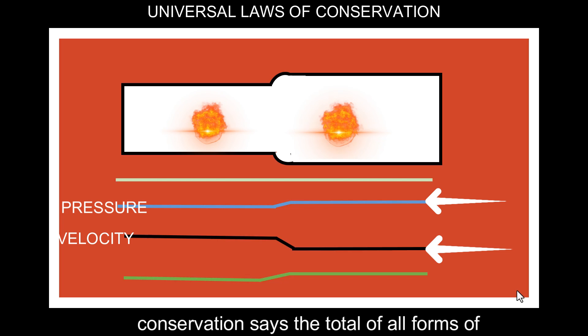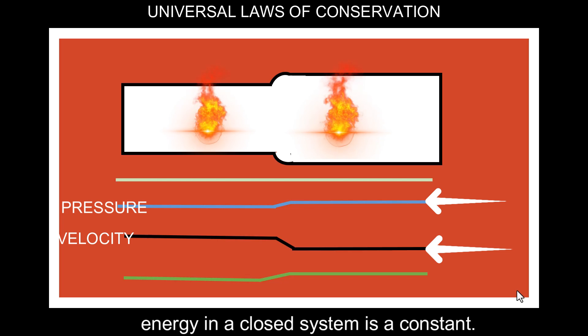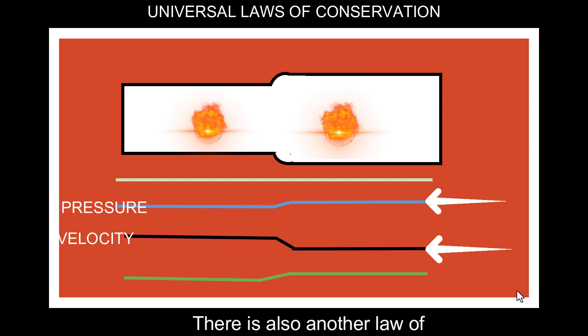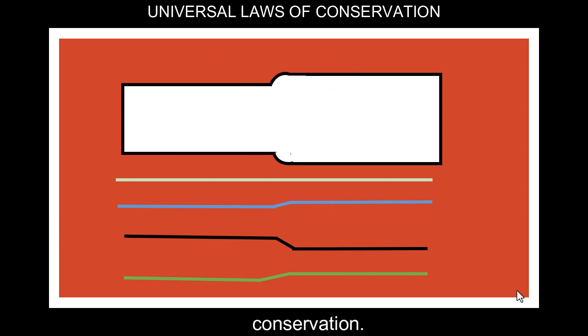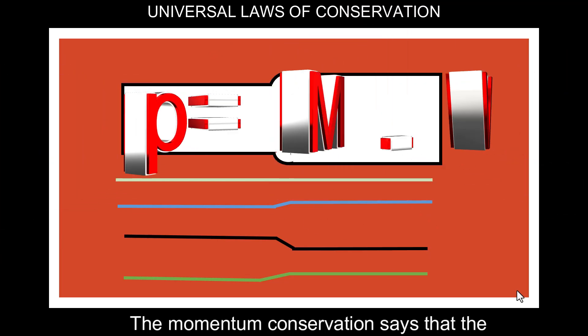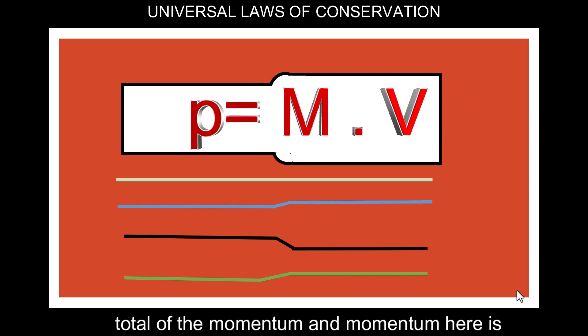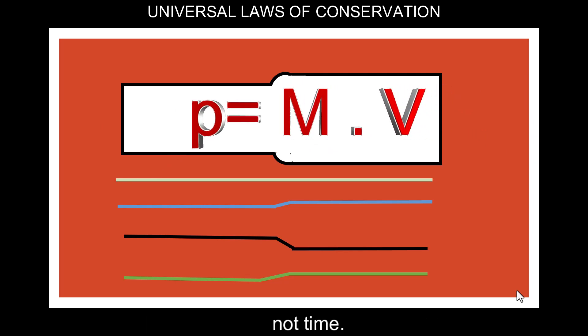Another law of conservation is the energy conservation. It says the total of all forms of energy in a closed system is a constant. There is also another law of conservation, the momentum conservation. It says that the total of the momentum, and momentum here is not time, okay? Momentum is mass multiplied by velocity. So, the momentum conservation says, the total of the momentum in a closed system is a constant.